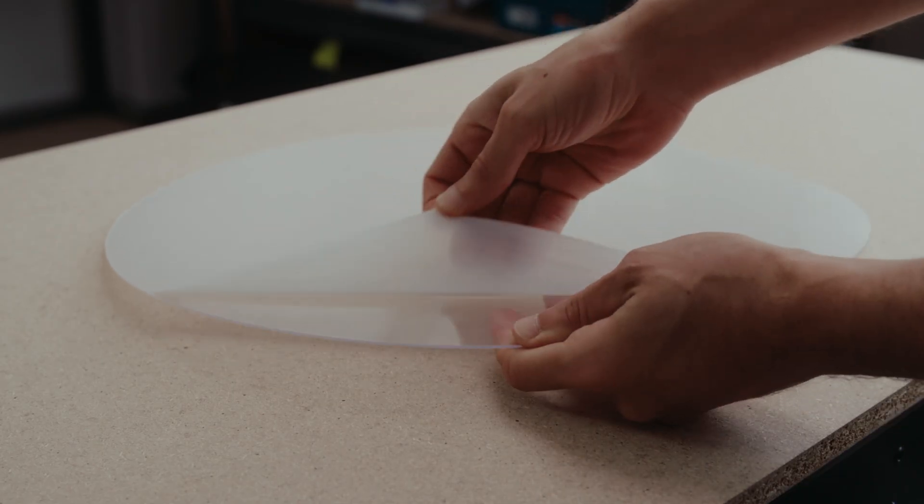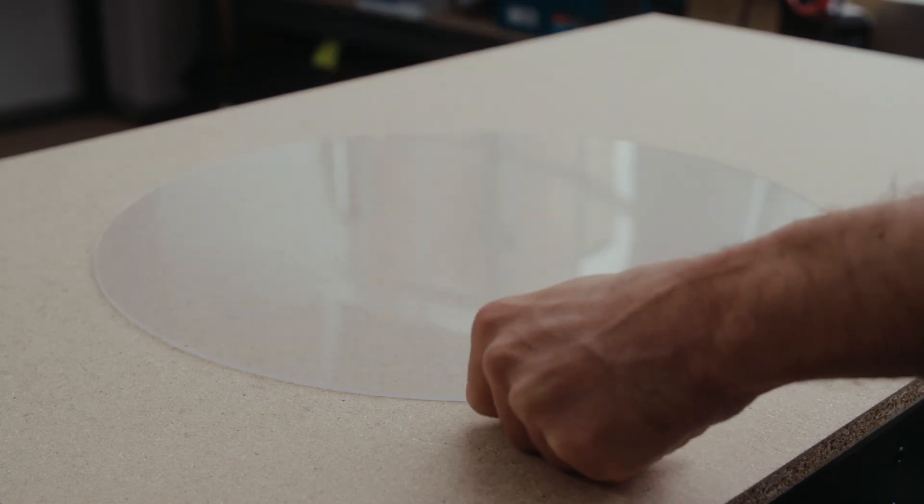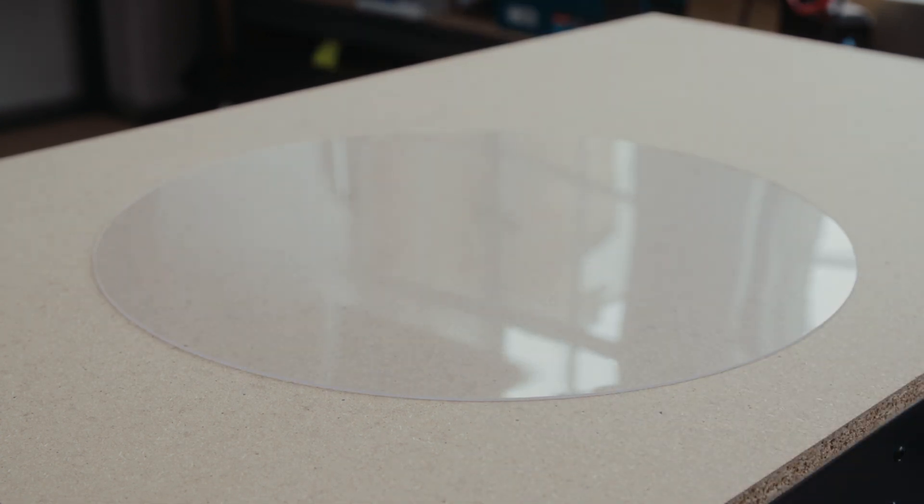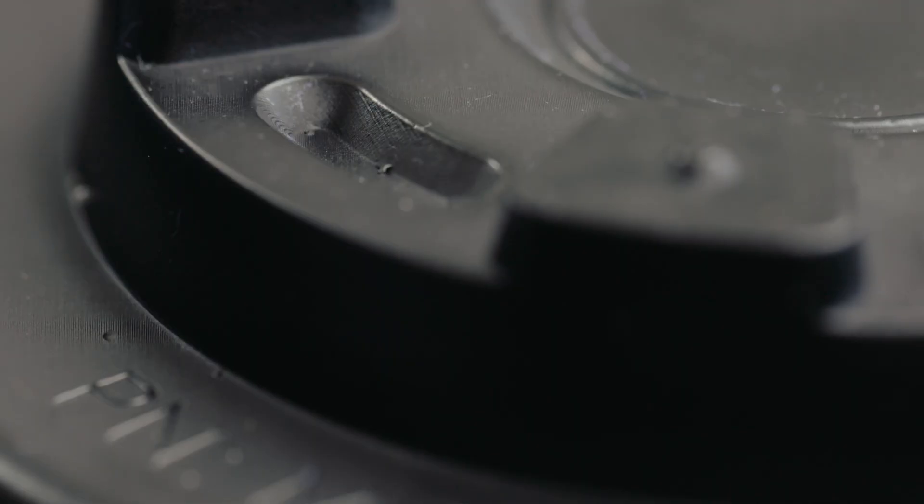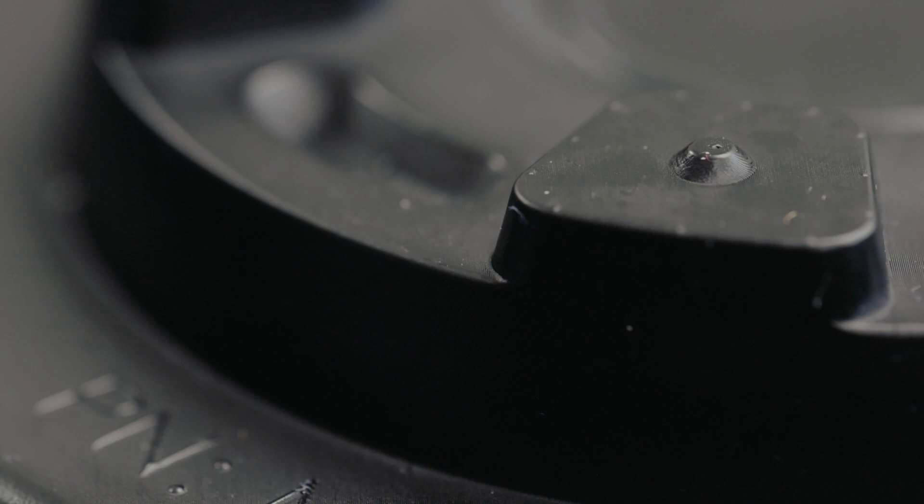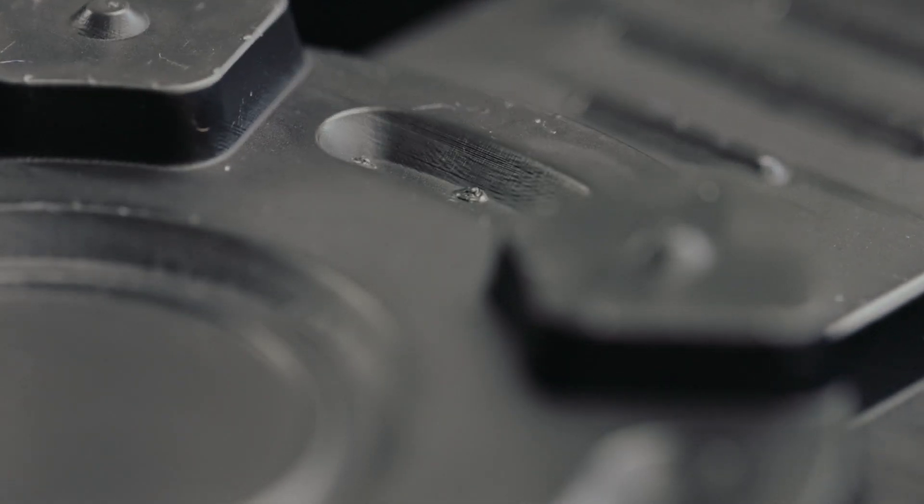Some of our materials have a protective film. Make sure you remove this before placing the material in the machine. For our project, we'll be using 4mm ABS. It offers high stiffness and excellent impact and chemical resistance.